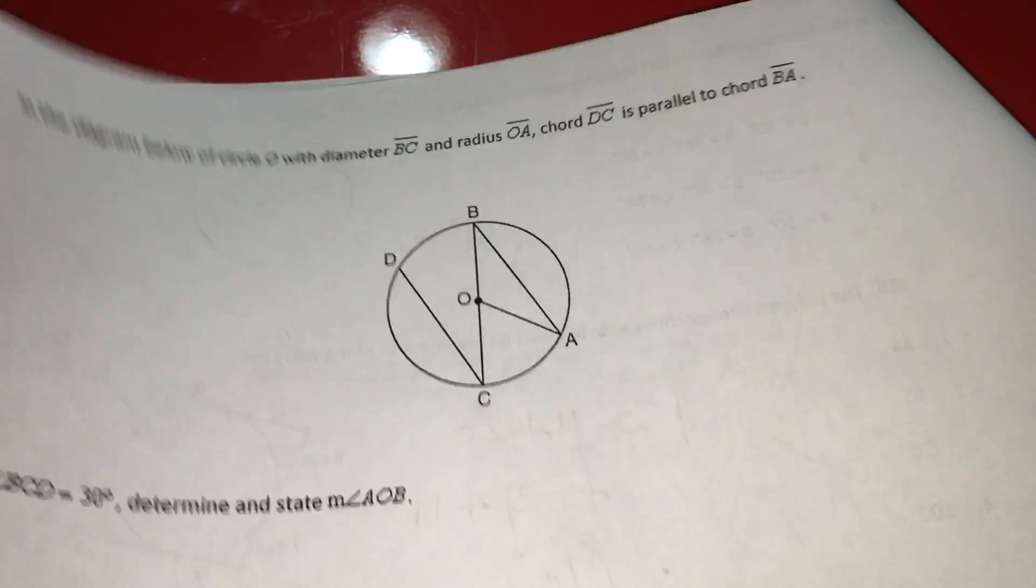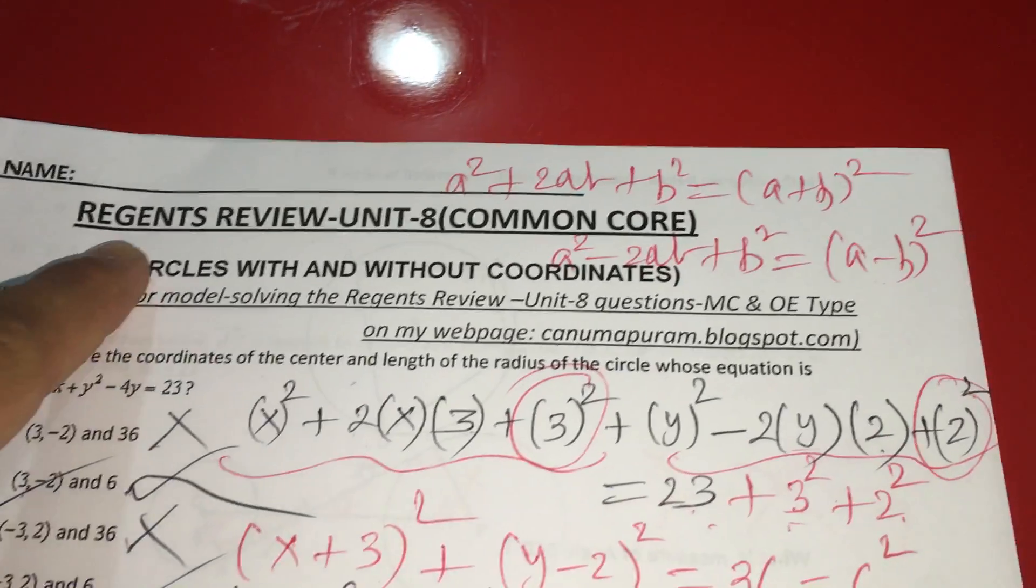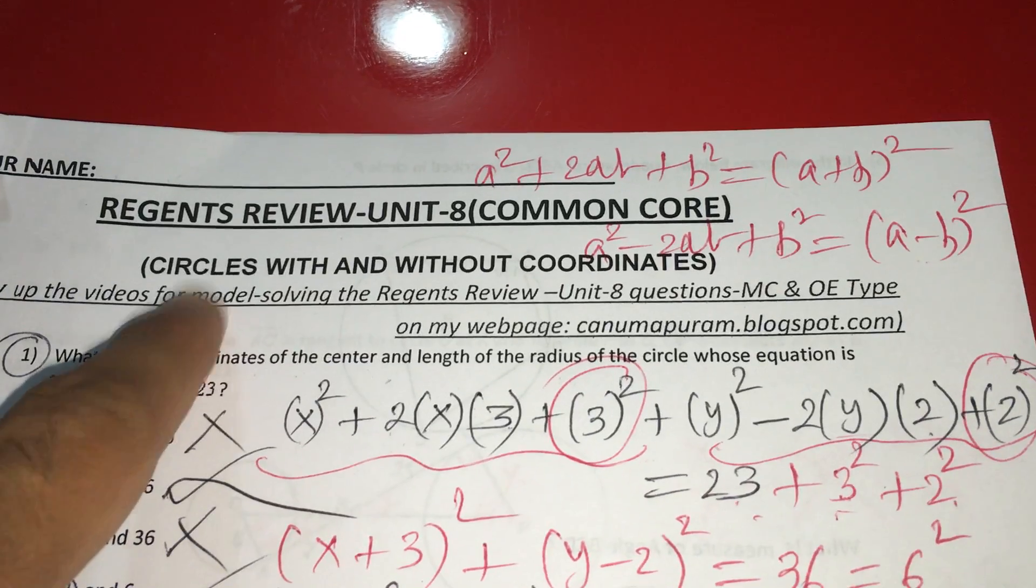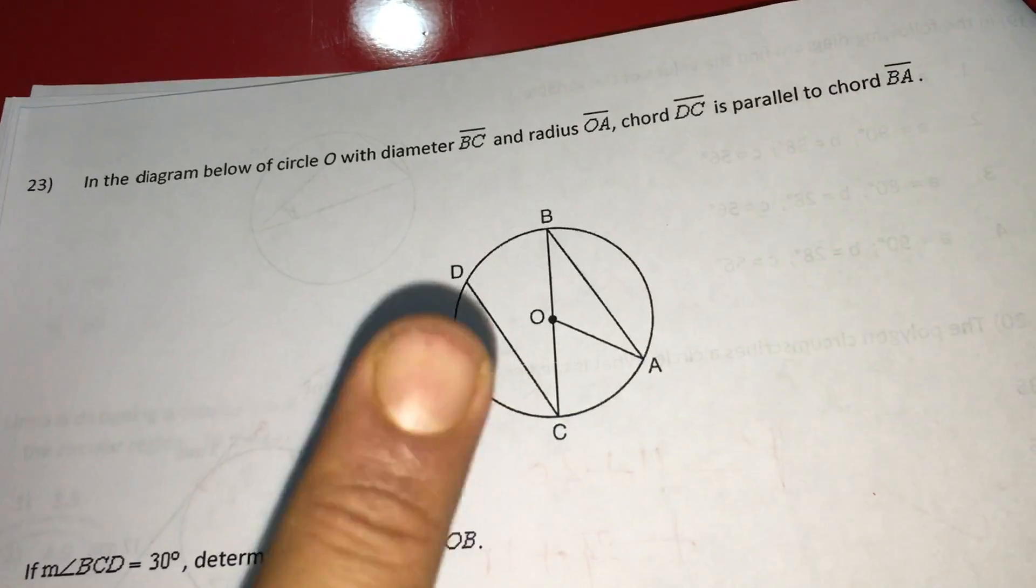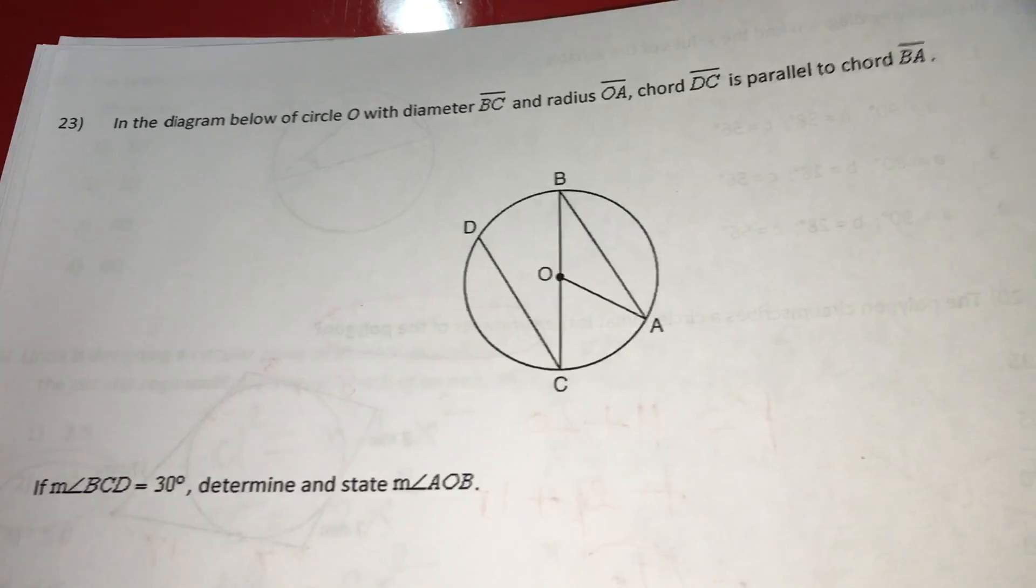Now, under this recent review unit 8, circles with and without coordinates, we have this 23rd and 24th similar type. Let me model this 23rd for you.